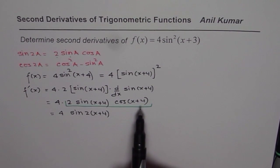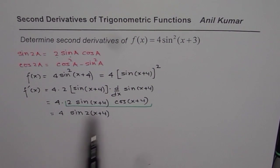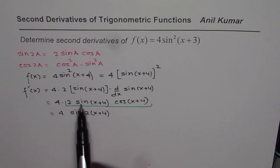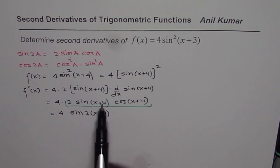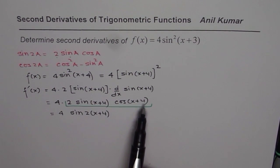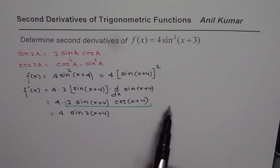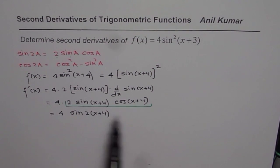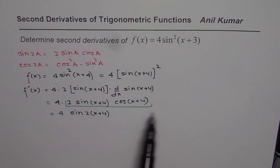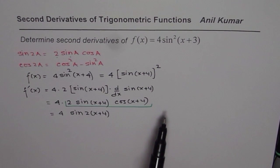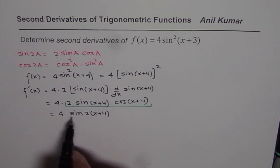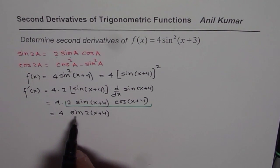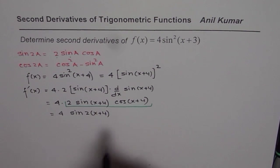If you do not simplify, then you will be writing this as 8 times sine of x plus 4 times cos of x plus 4, and the second derivative will involve the product rule, which is slightly more complicated. If you simplify, you get 4 sine of 2 times x plus 4, which is very simple.